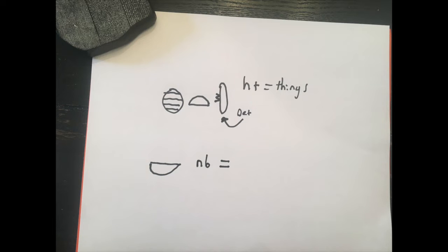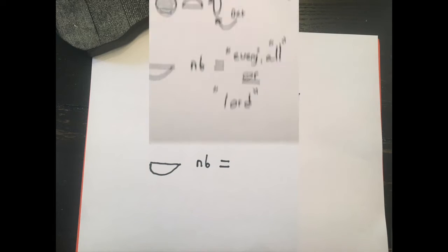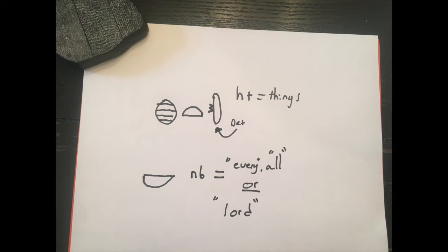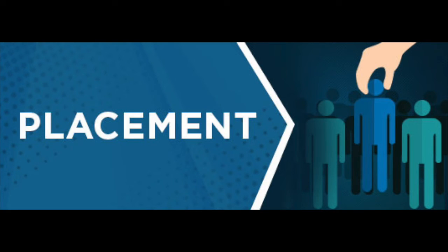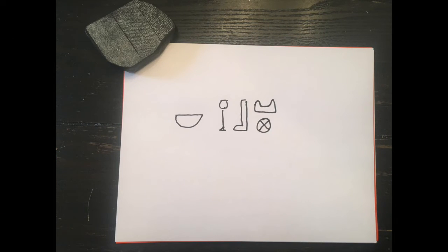Nub has two different meanings. This is the basket without a handle. Nub can either mean 'every' and 'all,' or it could mean 'lord.' Just as a review — and it's always good to go over things a few times, especially with a language like this — how do you know if it means 'every/all' or 'lord'? It's all about placement. If the word nub comes at the beginning of a word, it means 'lord.'